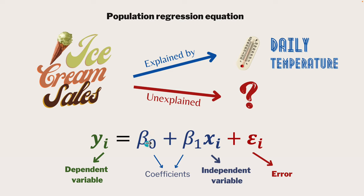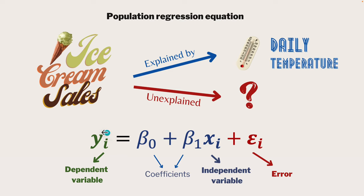These b-looking things are actually Greek letters - beta 0 and beta 1 - and these are our coefficients. Together with the x term, it's a linear relationship with y, which is why this is called linear regression. If you remember back to high school and y equals mx plus b, here we have exactly the same thing: y equals beta 1 times x plus beta 0. They've sort of reversed it here, but it's the same thing - a linear relationship between y, our ice cream sales, and x, our daily temperature. The one addition we have is our error term, which makes it a regression, not just a linear relationship.